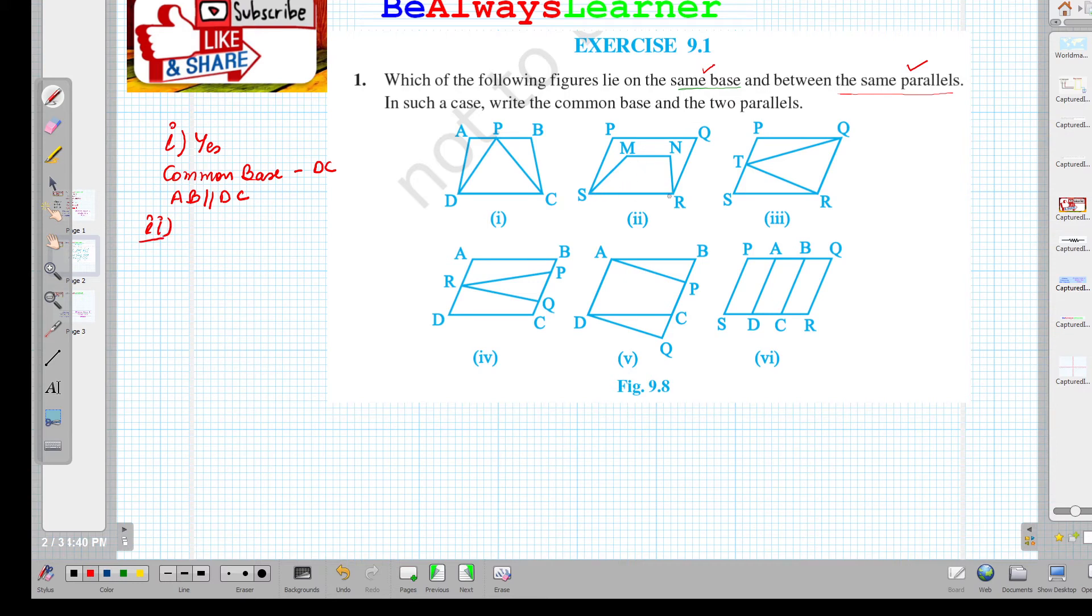If we look, SR is parallel to PQ, and MN is parallel to SR also, but this is not between the same parallel lines. This gap makes SMNR smaller, so we can say no—it is on the same base but not between the same parallel lines.